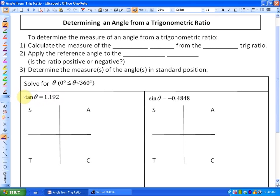So if you look in this first example, what if it's tan θ equals 1.192? So here's how we do that.